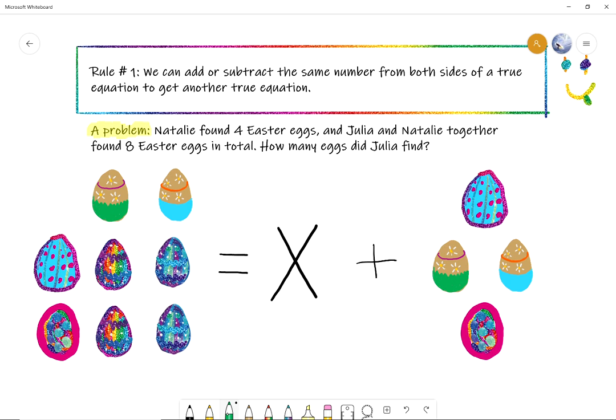Okay. So we have an unknown, a mystery number, which is how many eggs did Julia find? What we do know is that Natalie found four Easter eggs. Here they are. And that together, Julia plus Natalie's eggs add up to how many eggs in total? Eight Easter eggs. So this is the total of Easter eggs they found. So what we're going to do is try to find how many eggs Julia found by subtracting eggs from both sides of the equation. So, I'm going to remove an egg here. Then I have to remove it also on this side.